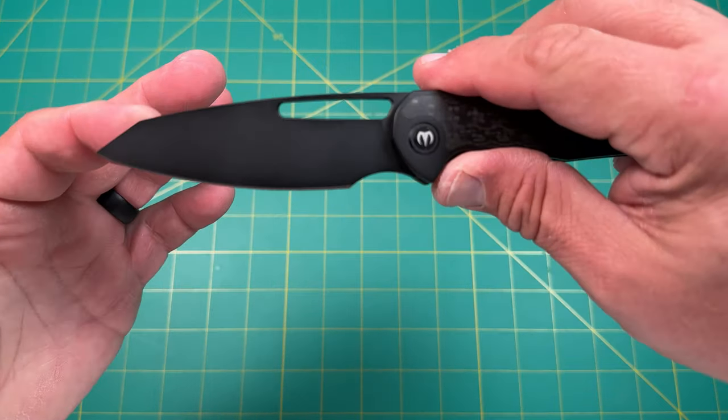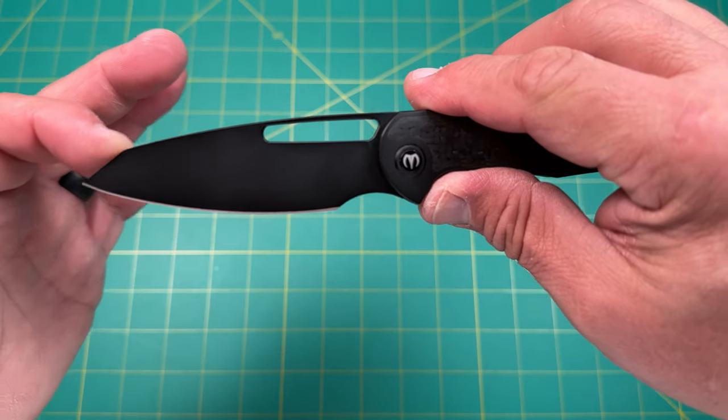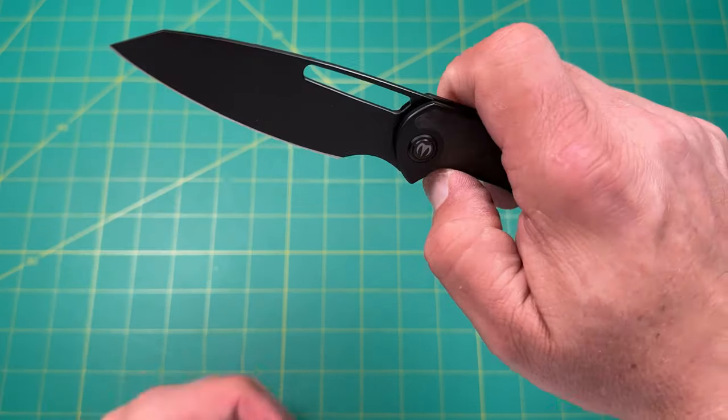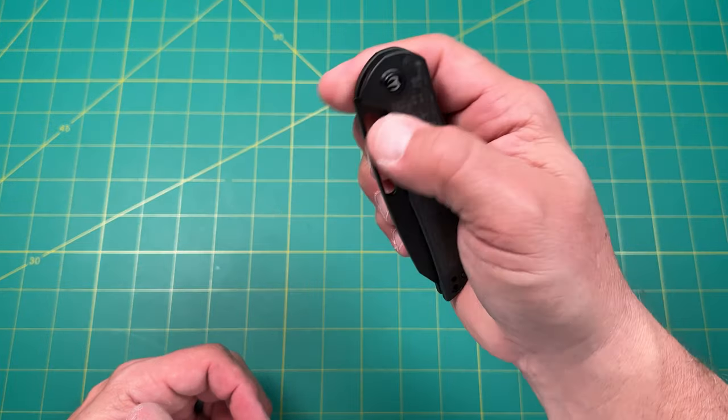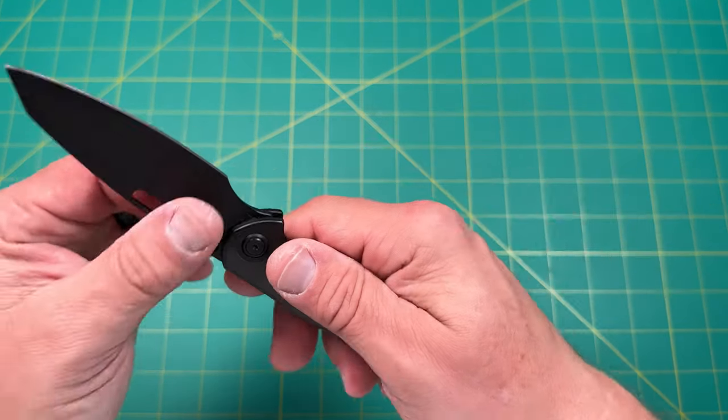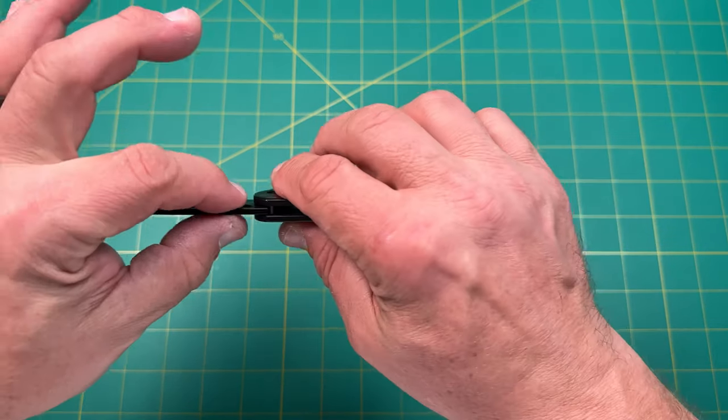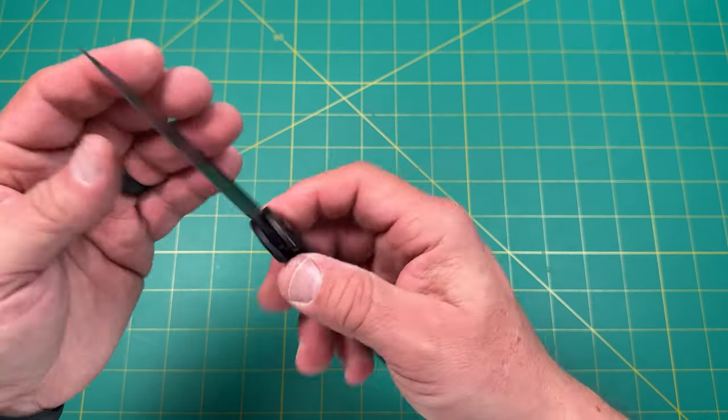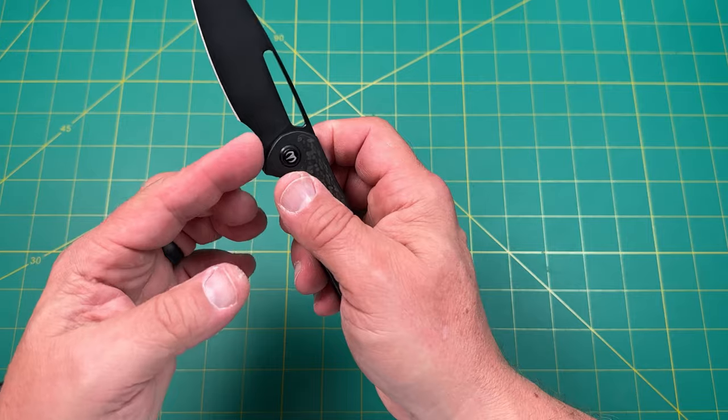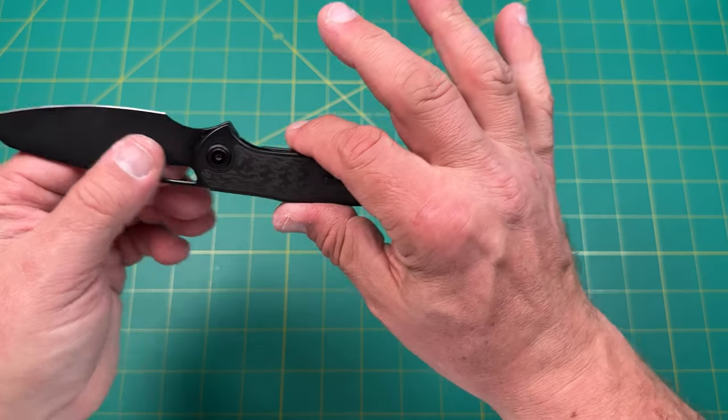Now, this is kind of a sheep's foot, wharncliffe, reverse tanto, modified, whatever you want to call this. We'll call it whatever. Some people, the blade police will absolutely correct me. It's a full flat grind, which I really like. Full flat grind. It comes to a really nice thin edge. It's a thin edge. We'll measure this in a second. Really nice, sharp, beautiful finger choil.